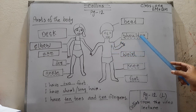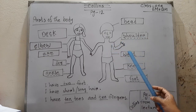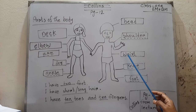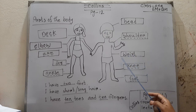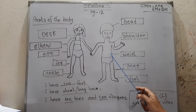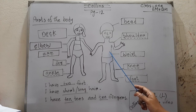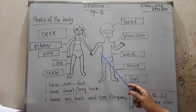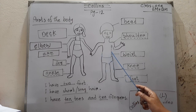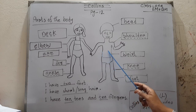Then: waist — W-A-I-S-T. Waist means 'kamar' in Bengali. We use a belt at the waist. The area where the belt sits — that part is the waist. This is a part of the body.